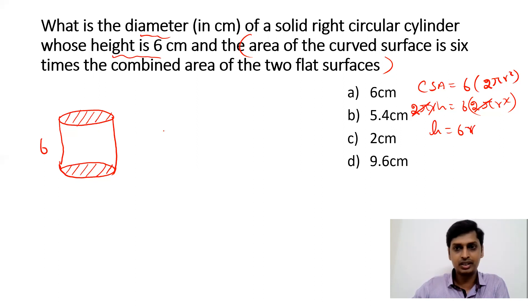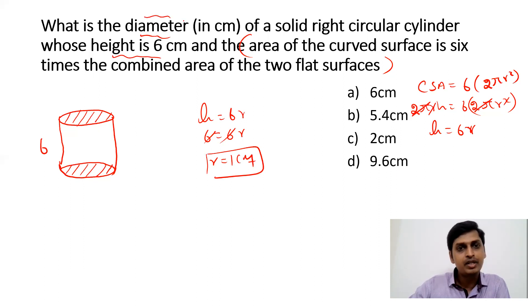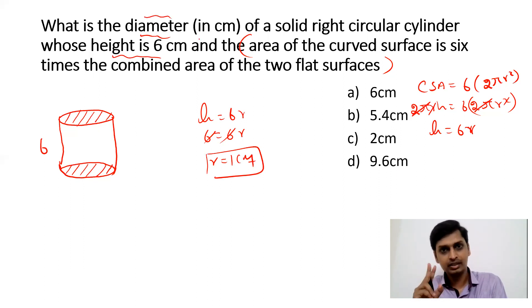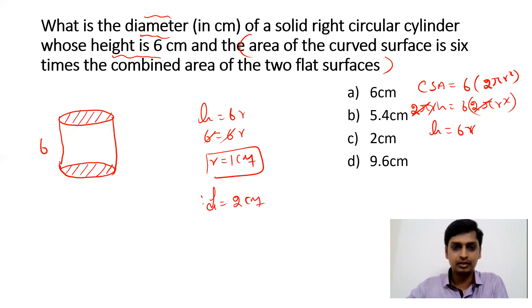Since h = 6r and h = 6 cm, we get r = 1 cm. The question asks for the diameter, so diameter = 2 × 1 = 2 cm. This is the answer.